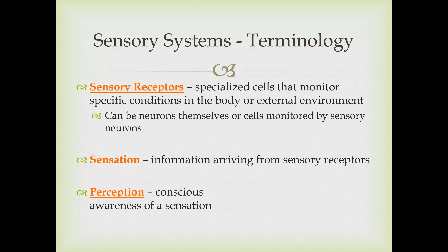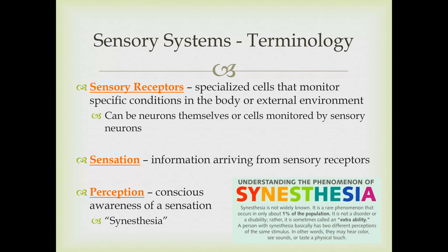A good example is synesthesia, a condition in a small percentage of the population where sensory information travels differently from the body to the brain. For example, the part of their brain that sees letters on a page may also be connected to the part that perceives different colors—so they might always see the letter S as red. People with synesthesia can experience hearing colors, seeing sounds, or tasting a physical touch. Their sensations are going to multiple areas in their central nervous system, causing them to have a different perception than most people.